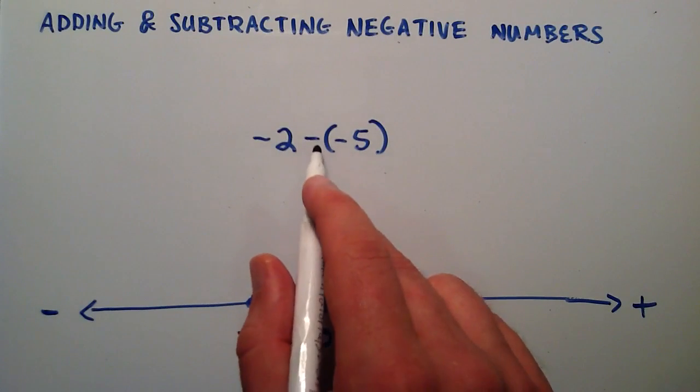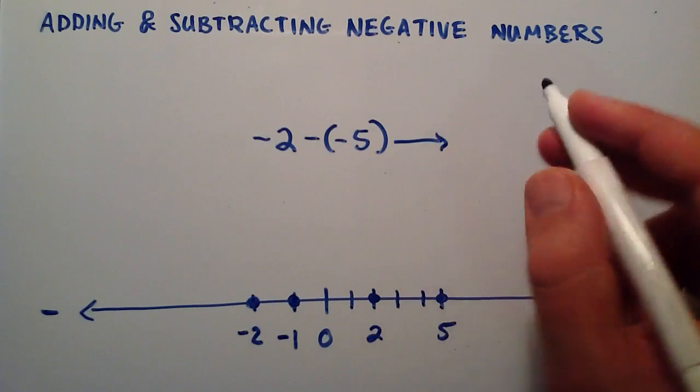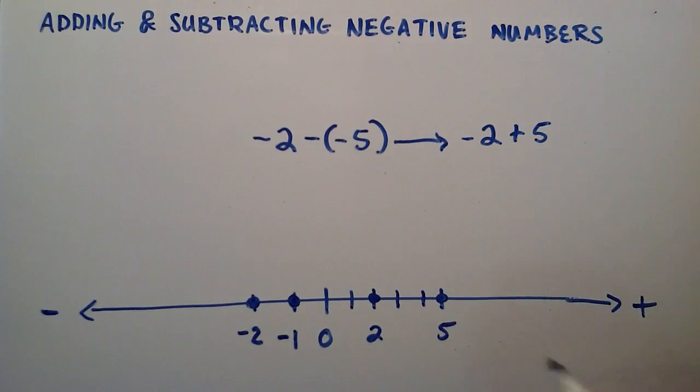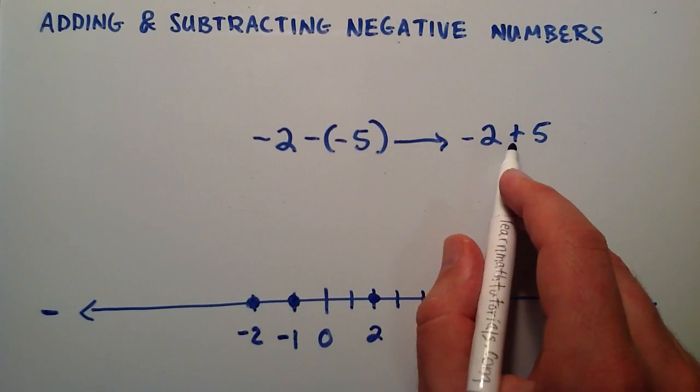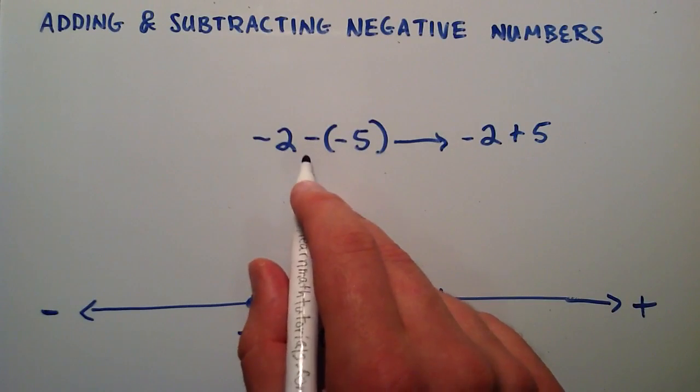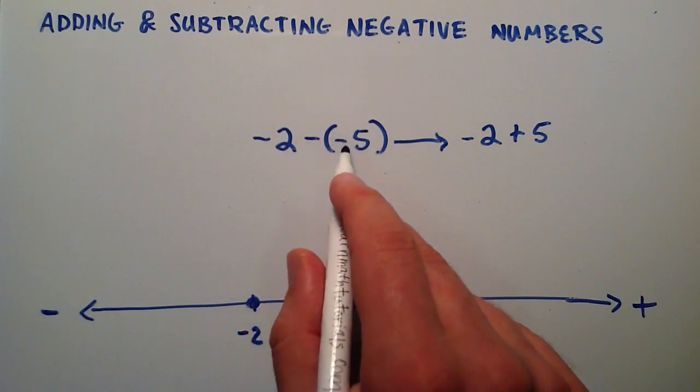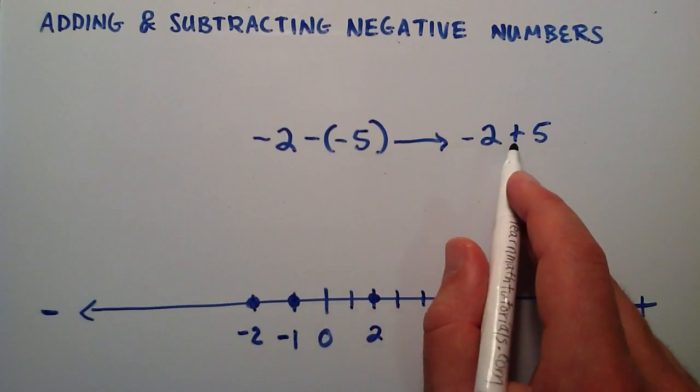And when you see a minus a negative, that's the same thing as negative 2 plus something. So a minus minus is the same thing as a plus. So in this case, you start at the negative 2, and we're going basically the opposite of the minus direction. The opposite of the minus direction is the plus direction.